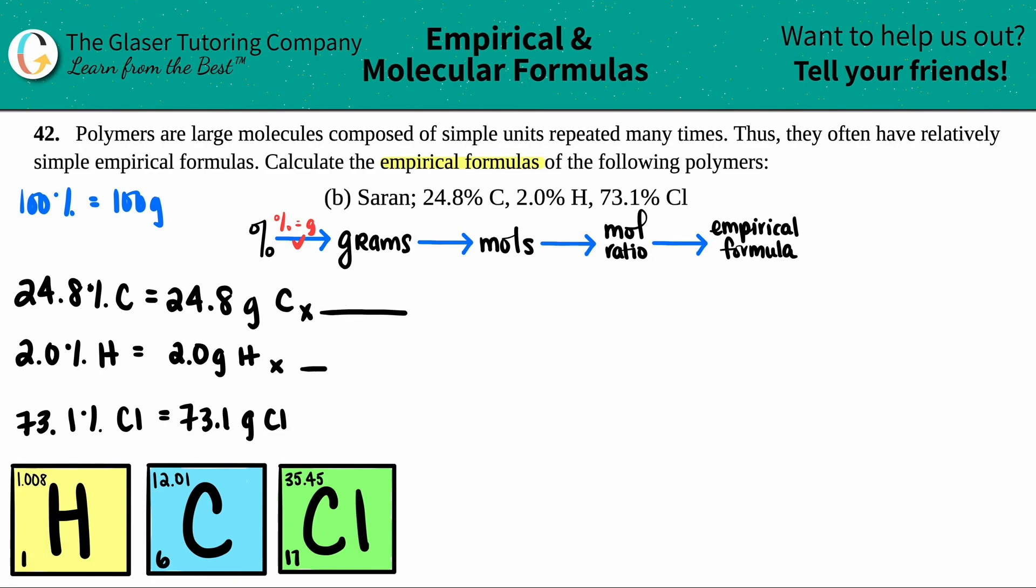So for each one of these, I'm just going to make my little ratio. And now I like to cancel out first. I say, okay, I don't want grams of carbon anymore. Whatever unit you don't want always goes on the opposite side. So in this case, the grams of carbon will go on the bottom. Grams of hydrogen will go on the bottom, and then grams of chlorine will go on the bottom of that ratio.